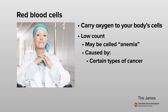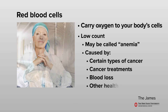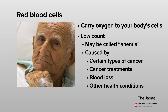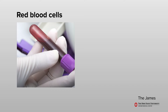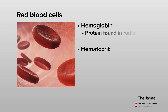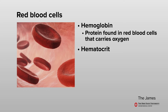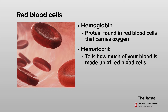If your red blood cell count is low, you may have anemia. Anemia can be caused by certain types of cancer, cancer treatments such as radiation or chemotherapy, or blood loss. Other health conditions could also make your red blood cell results show up as either high or low. The CBC measures two parts of your red blood cells: hemoglobin and hematocrit. Hemoglobin is a protein found in the red blood cells that carries oxygen throughout the body. The hematocrit shows how much of the blood is made up of red blood cells, given as a percentage.